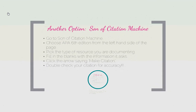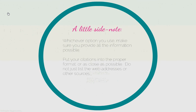Whichever option you use, make sure you're providing all the information you possibly can. You'll probably run into a site or two where you can't find everything you need for the citation — put everything in that you can. Do not just list the web addresses if you get frustrated. Go ahead and put it in citation format, and if there are a couple of holes, we'll deal with that and I'll help you figure out how to fill them in. If you just give me a list of web addresses, I'm going to think you did not try, and I'll take off more points than if you try and just don't do an exemplary job.